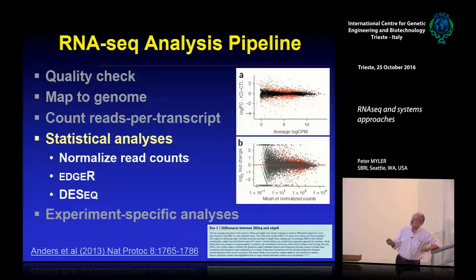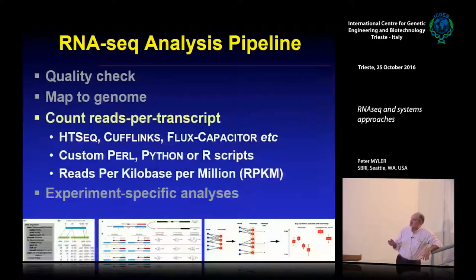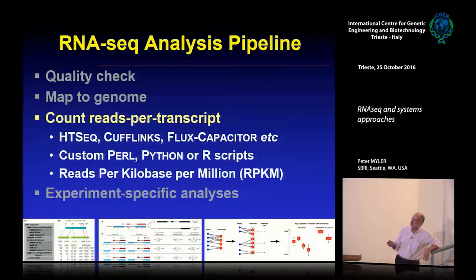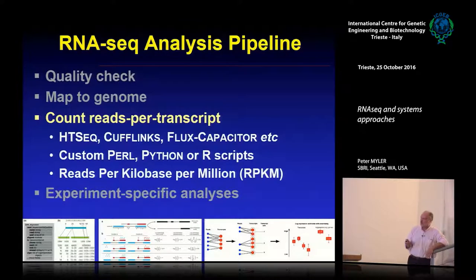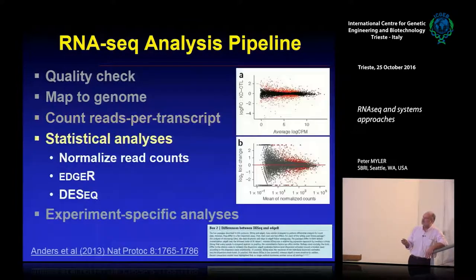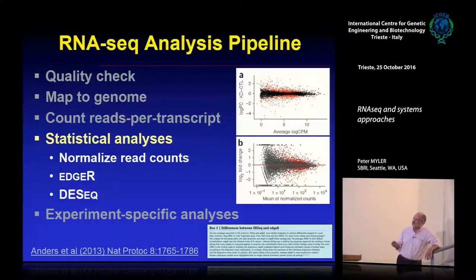We tend to use HTSeq or Cufflinks — there are a bunch of options and I'll show a comparison shortly. For statistical analysis, the first thing is to normalize read counts because library sizes differ between samples and you can't compare raw numbers meaningfully. How you normalize matters: mean normalization (reads per million) is not ideal; median normalization is better. Packages like edgeR and DESeq use quantile normalization, which is probably even more accurate.